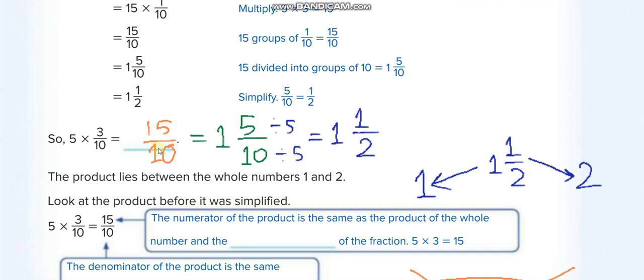Because two tens equals to 20. 20 is more than 15, we can't take two tens. We can take only one complete 10 out of 15. So one is the whole number, and if you take out one complete 10 from 15, the remainder is 5 over 10.